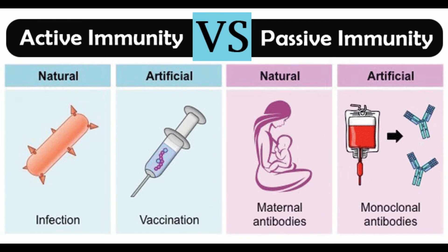In each case, immunity can be acquired either by natural processes — usually by transfer from mother to fetus or by previous infection by the organism — or by artificial means such as injection of antibodies. Immunity allows the body to fight off infections, and is composed of two major lines of defense: innate immunity and adaptive immunity.